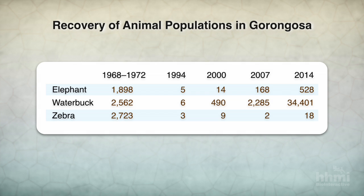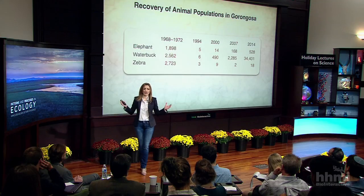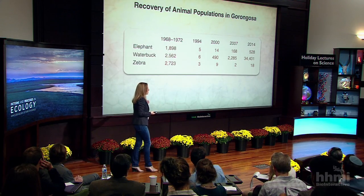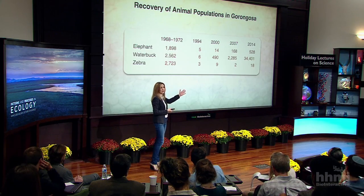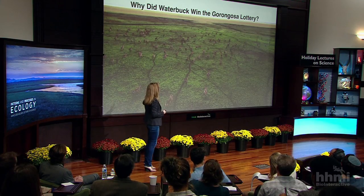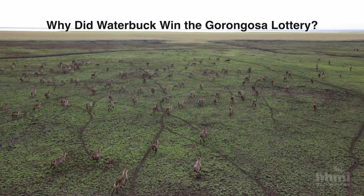There are basically two questions to be asked. First, why is the waterbuck growing so fast compared to everyone else — why is it recovering in this extraordinary manner? And why is it recovering to a level way bigger than what it was before the war? We thought things were pretty stable before the war, so how can the waterbuck reach such high levels? I'm going to try to make models that help us get at this question. Then the question becomes: why did the waterbuck win the Gorongosa Lottery? This floodplain used to have all sorts of different animals coexisting; now everywhere you look, it's mostly waterbuck.